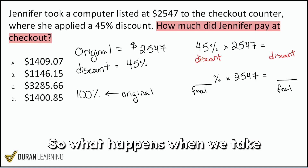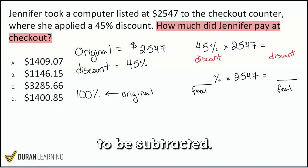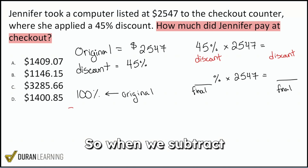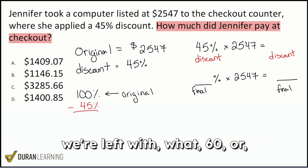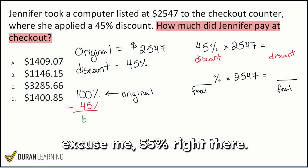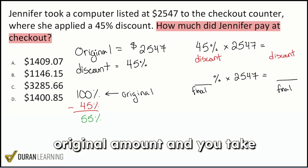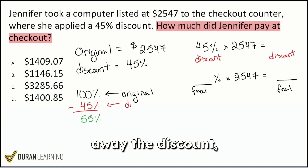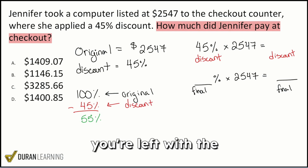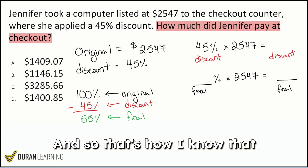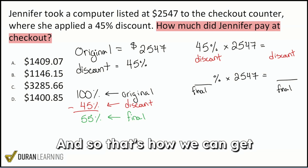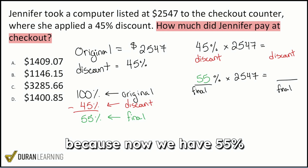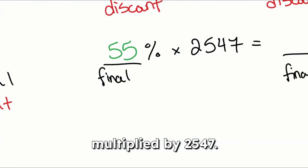So what happens when we take away the discount? A discount is supposed to be subtracted. When we subtract the 45%, we're left with 55%. That's what's left. So when you have the original amount and you take away the discount, you're left with the final amount. That's how I know that 55% is what I'm supposed to use, and that's how we can get the answer very quickly — because now we have 55% multiplied by $2547.